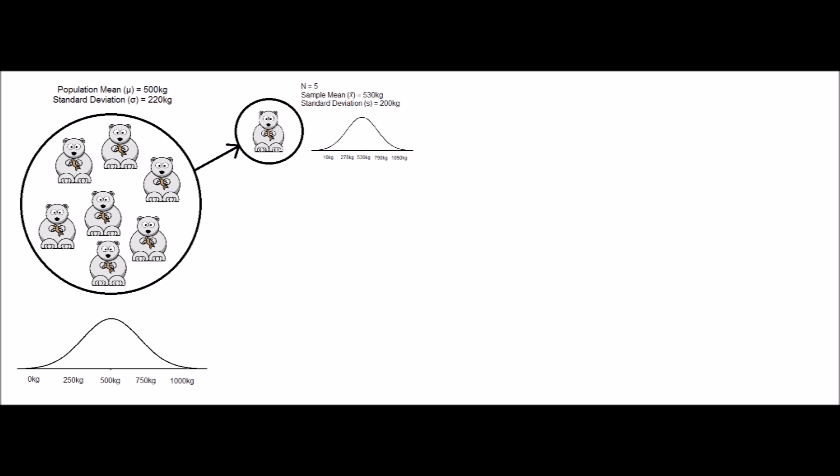From this sample of polar bears, we can calculate a mean and standard deviation. The mean and standard deviation we calculate are called statistics, and they are our best estimation of the true population values, or population parameters, which are otherwise unknown. From this information, we can draw a similar distribution that is our best representation of what adult polar bear weights look like in the population.